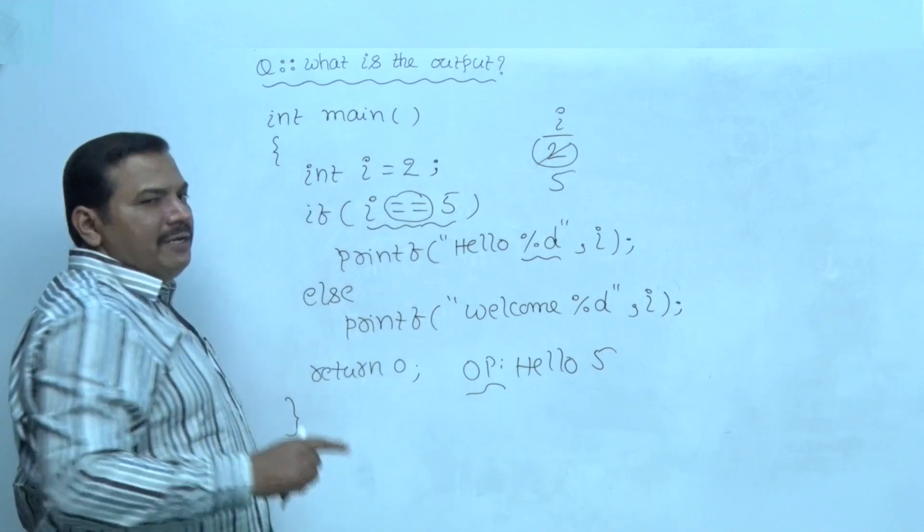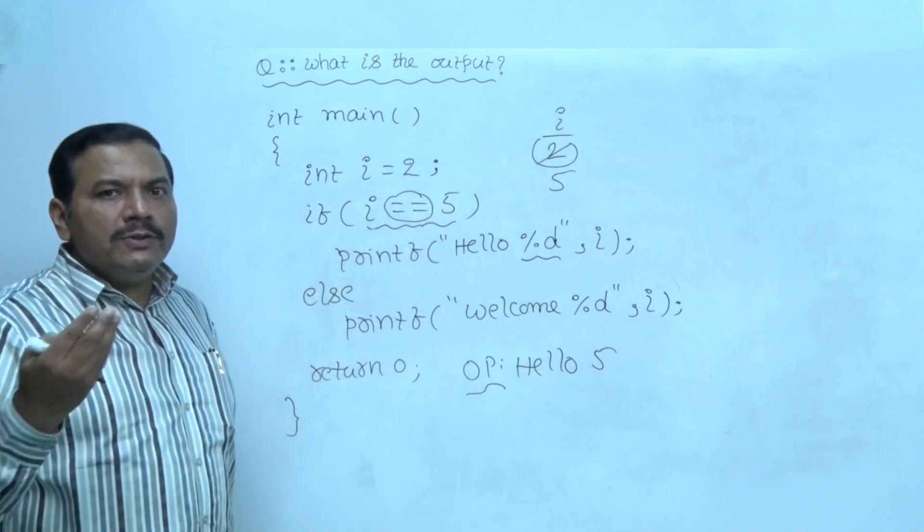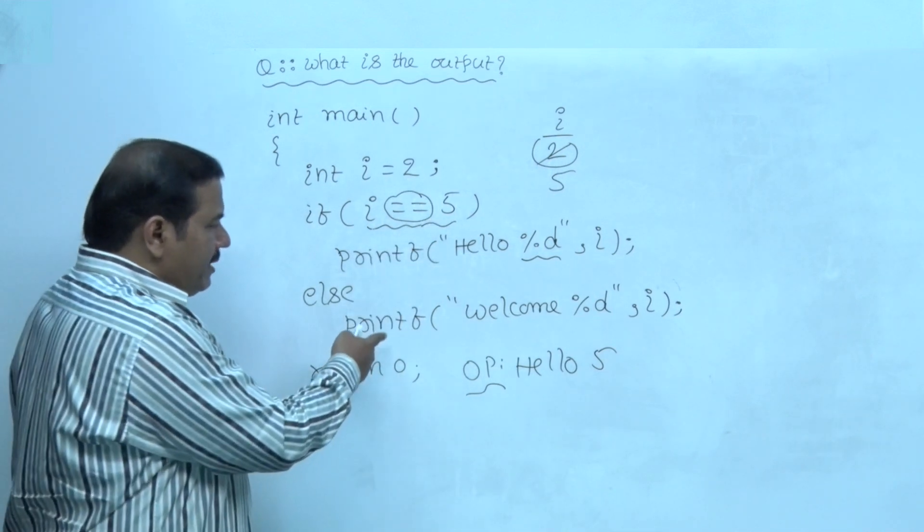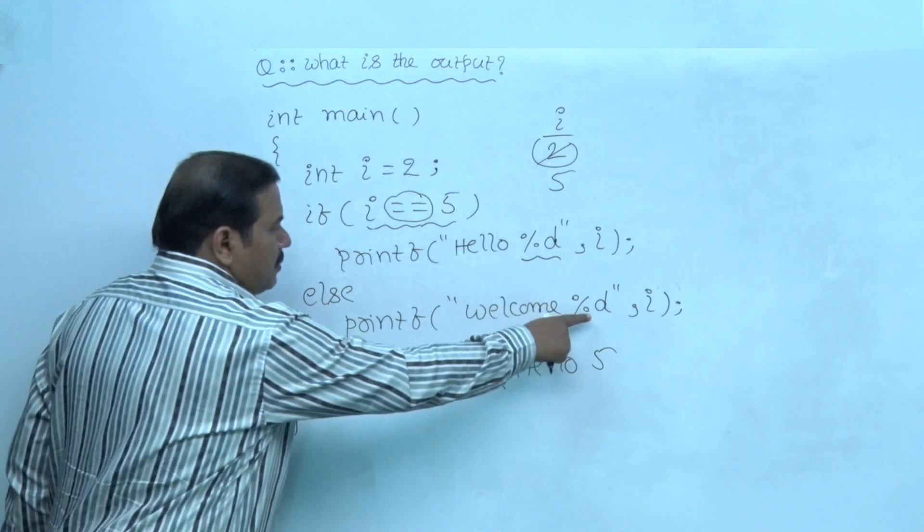The value of i, initial value of i is 2. Now, 2 equal to 5 is false. The code inside else block executes. Welcome, i value 2 is printed.